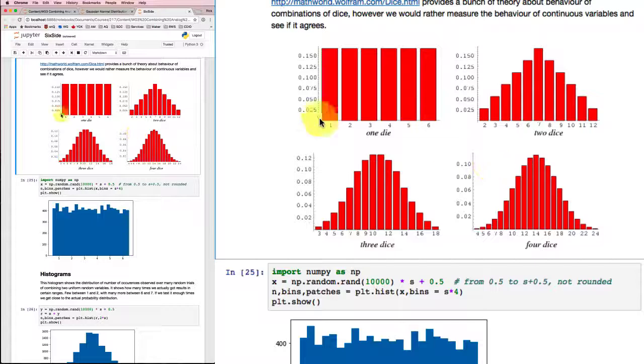But in our real world, we're not usually dealing with dice where you can only have one or two or three. Usually you can have a whole range of values, continuous range of values. So let's try that on a continuous basis without rounding off to the nearest integer.